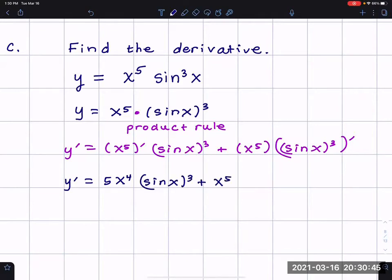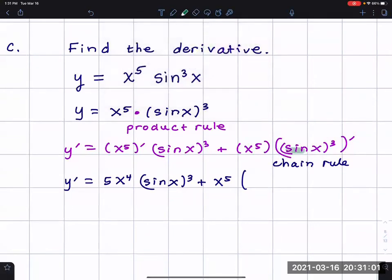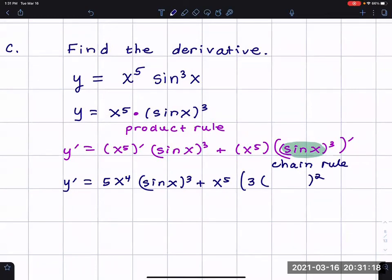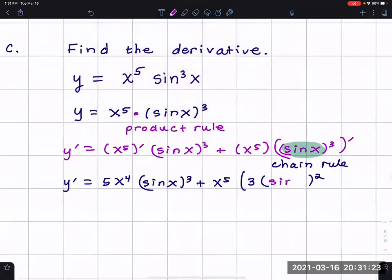Now for the derivative of sine x to the third, I have to use the chain rule. I momentarily ignore that piece inside, which is sine x, and just think I'm raising something to the third power. I'll call it u, so it's u to the third power. That derivative using the power rule is three u squared. I bring the three out front, and then three minus one is two.